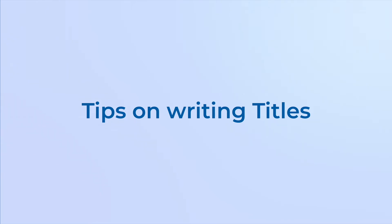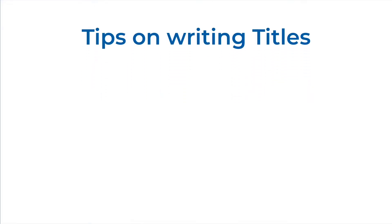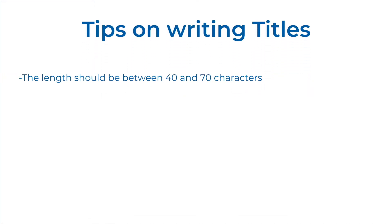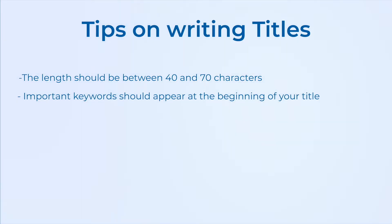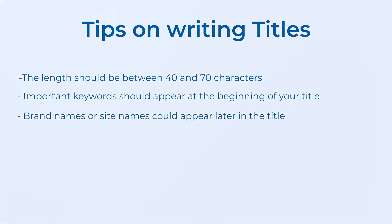Also, check out these tips for writing effective titles. The length should be between 40 and 70 characters. Important keywords should appear in the beginning of your title. Conversely, brand names or site names could appear later in the title, since their truncation would not affect the meaning as heavily.